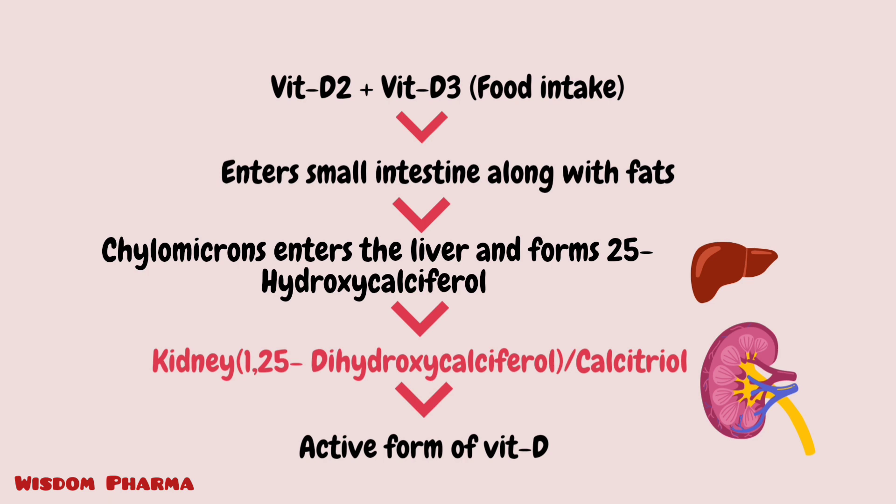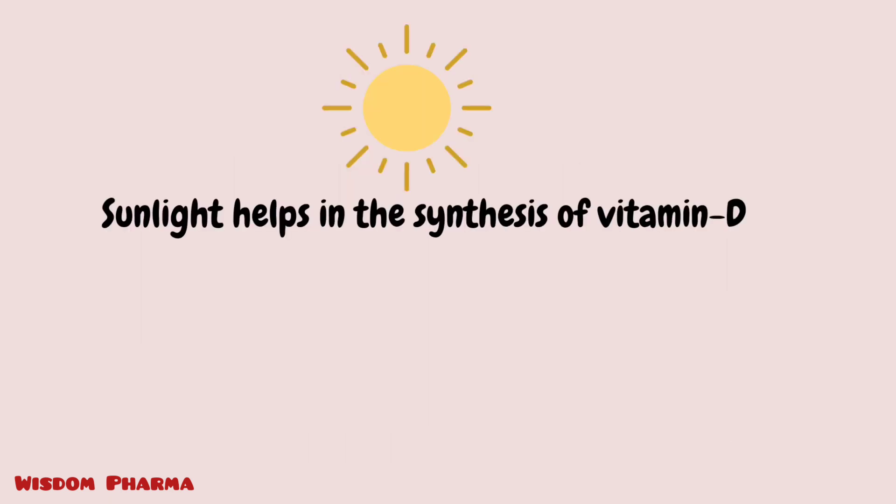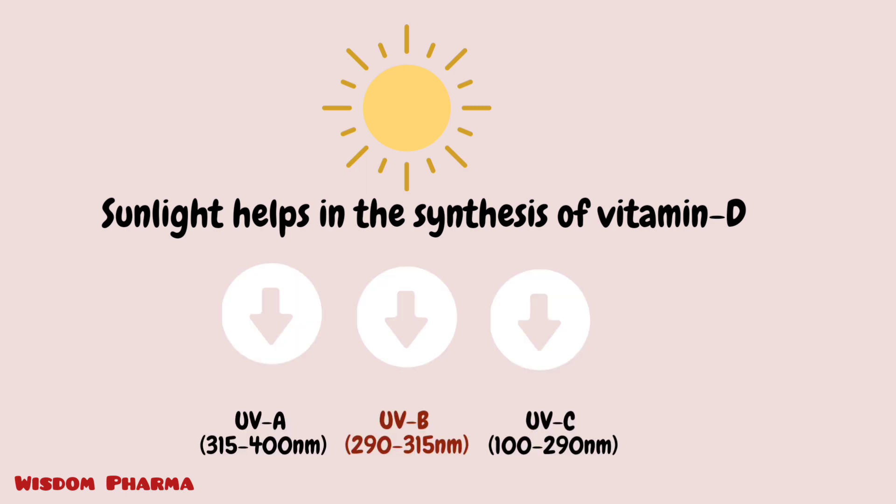The main source of vitamin D is sunlight, which drives vitamin D synthesis in the body. When we are exposed to sunlight, there are three types of UV light: UVA, UVB, and UVC. UVB is the most important for vitamin D synthesis.